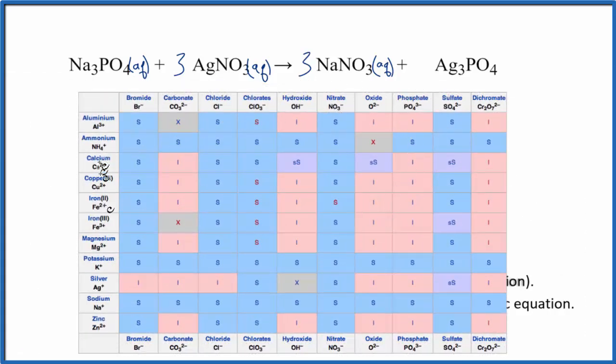So here's silver right here and here's the phosphate ion. So if we go over and down, that I means it's insoluble, it won't dissolve. So we actually have a solid in our test tube, a precipitate. So we can just put an S for solid after the silver phosphate.